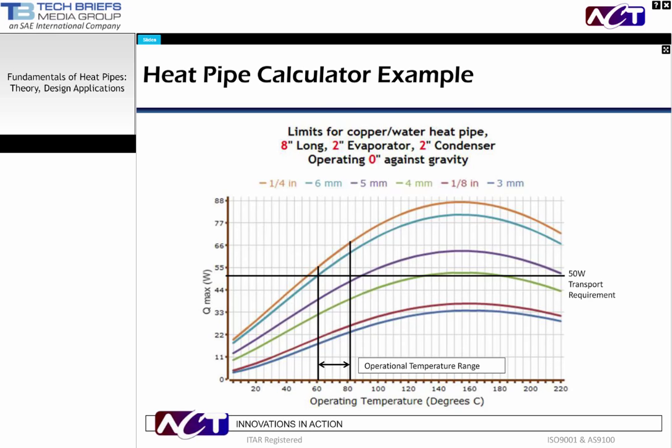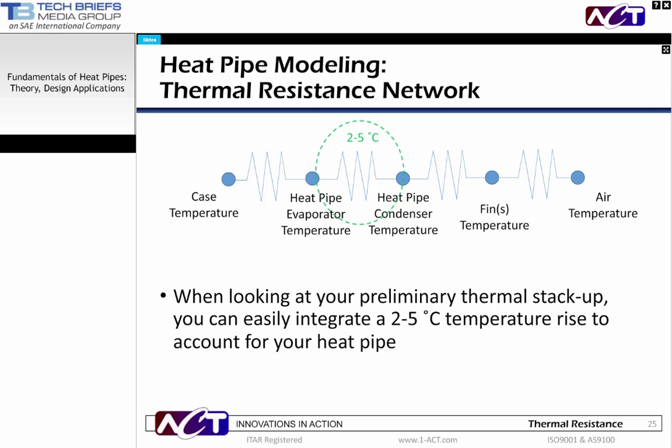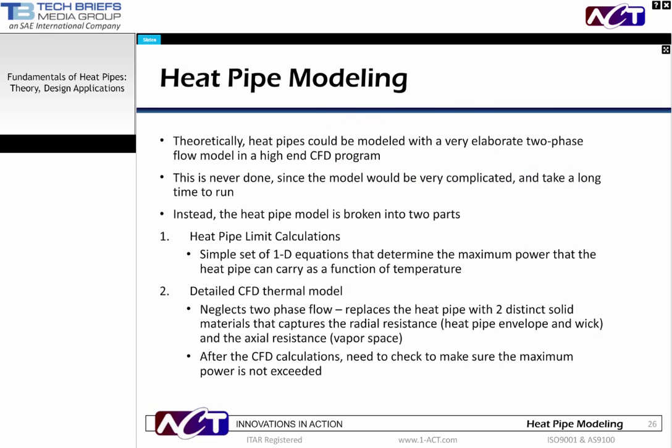Now that we have an understanding of heat pipe performance capability, let's look at how it can be used to model a potential solution. The first step in almost all thermal management solution modeling efforts is to develop the thermal resistance network to determine what the heat pipe requirements are needed to deliver the necessary heat transfer. This is an example for a typical electronics cooling application. The thermal resistance always starts with the heat generating component — the case temperature — and ends with the heat being dissipated to the air temperature. Each interface has a thermal resistance that must be accounted for and must be within the allotted thermal budget. In these networks, heat pipes will generally produce only a 2 to 5 degree temperature rise across the vapor space inside the heat pipes.